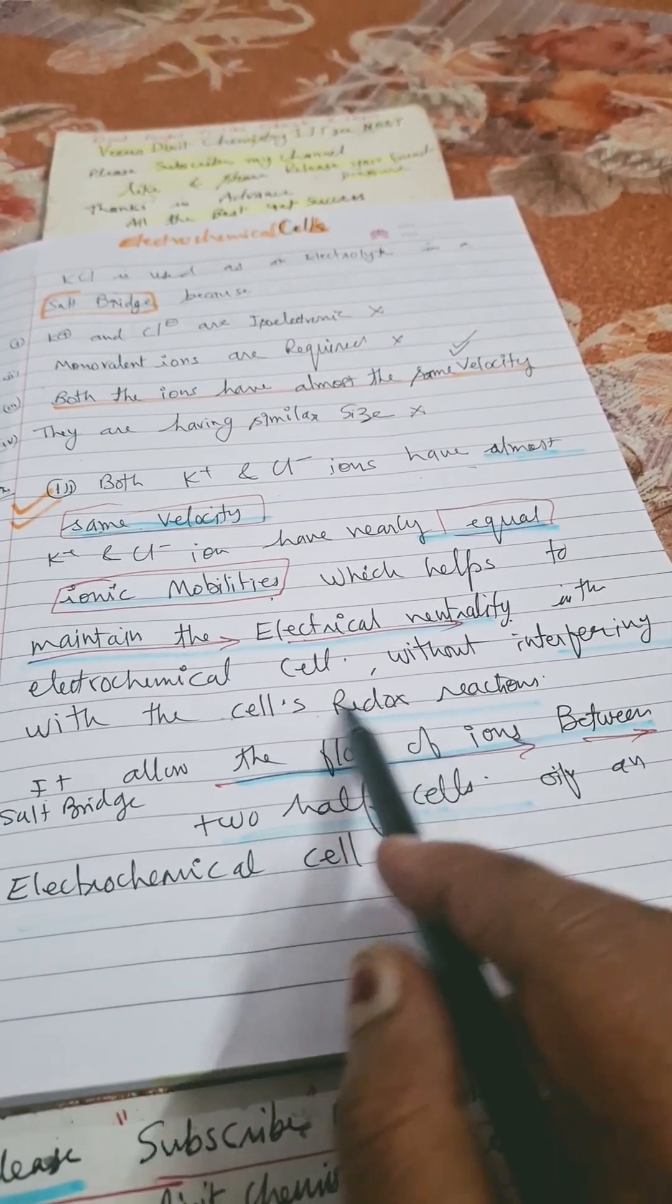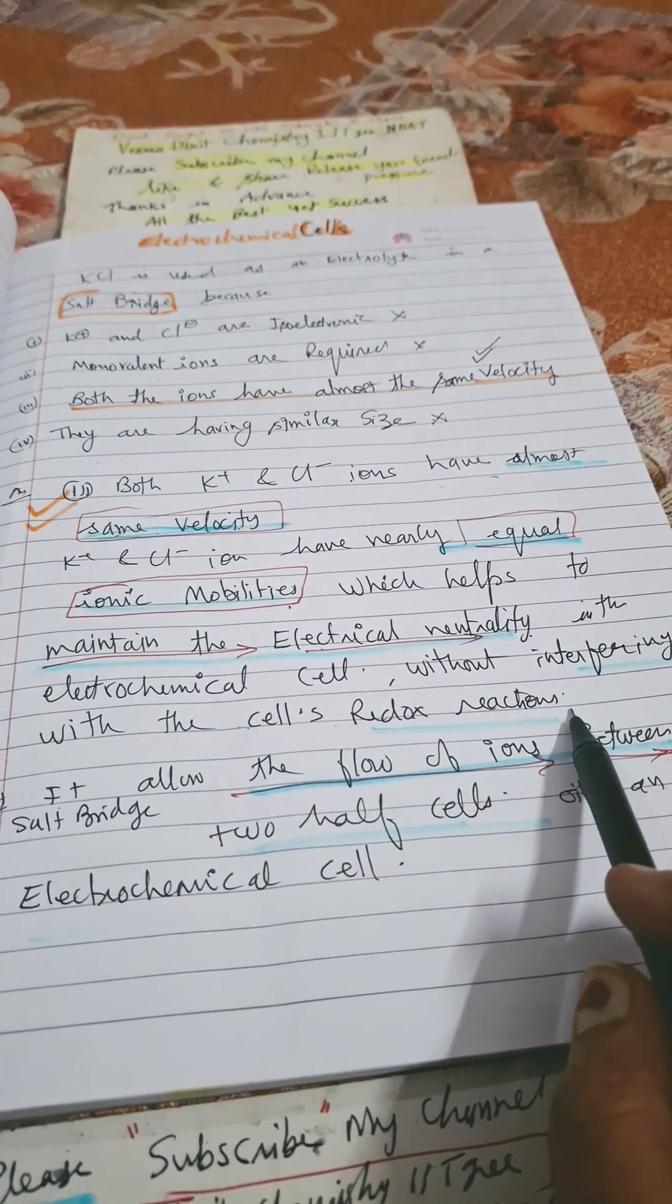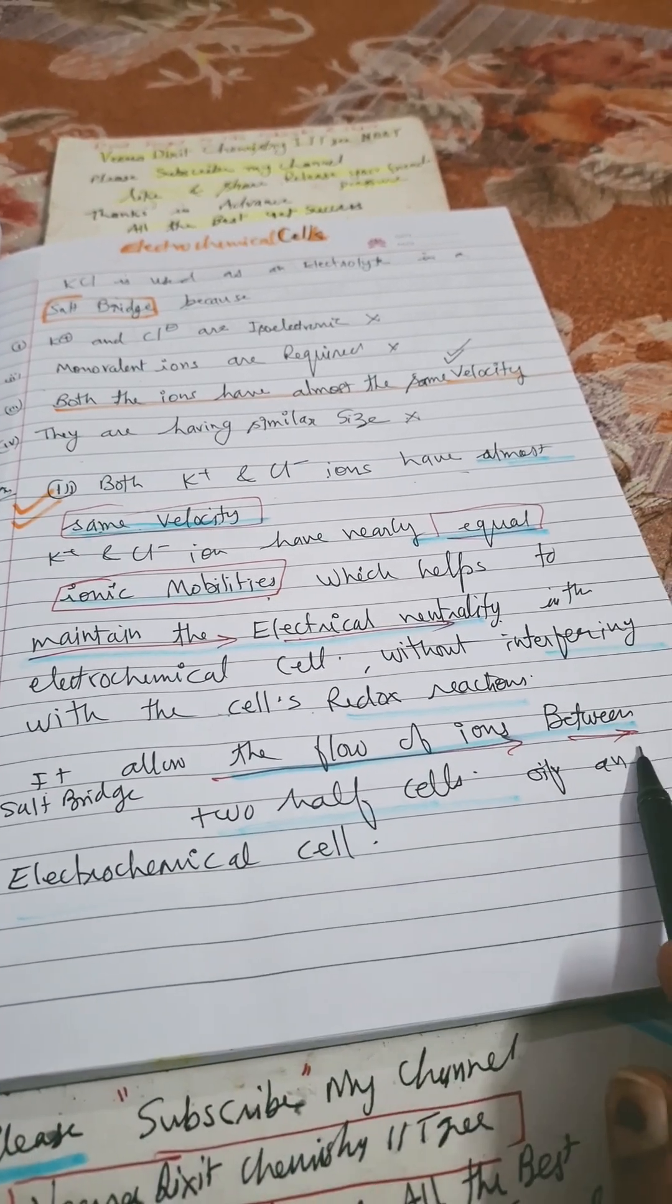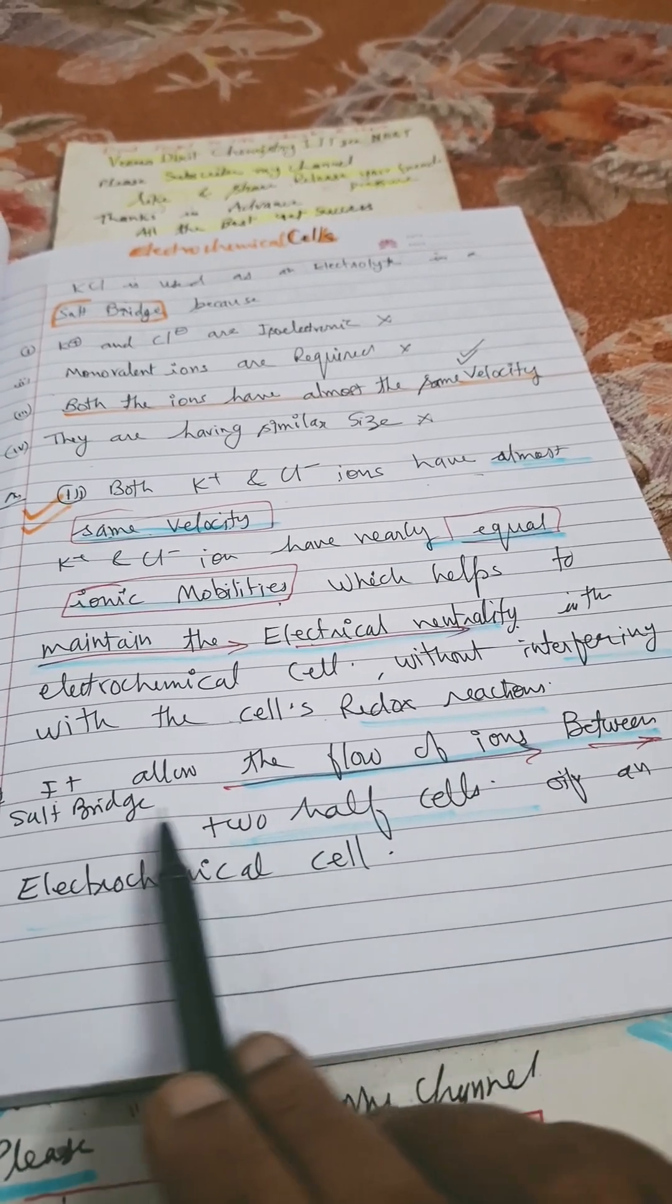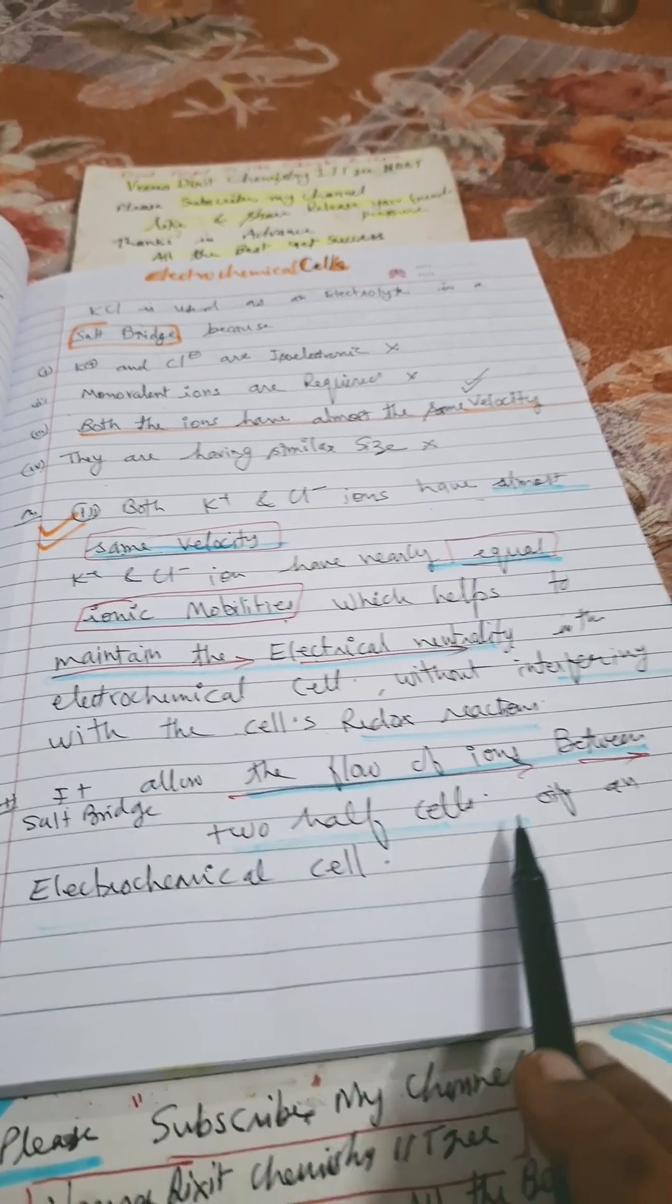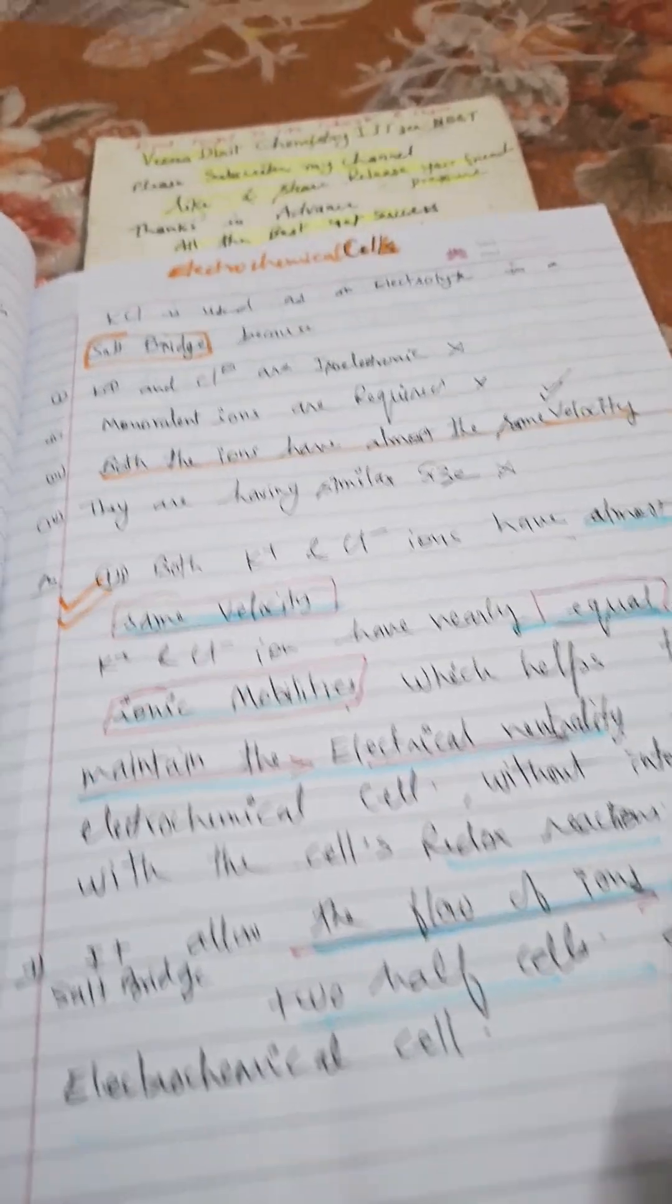Second, it will not interfere with the cell's redox reaction. Third, it allows the flow of ions between two half cells in the electrochemical cell.